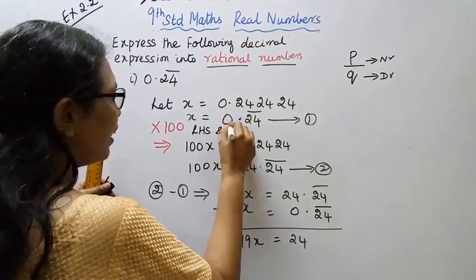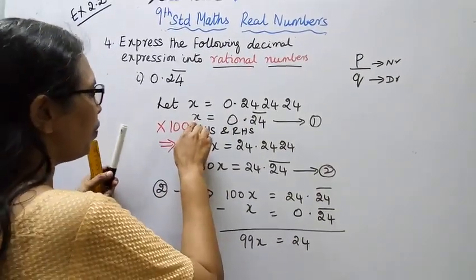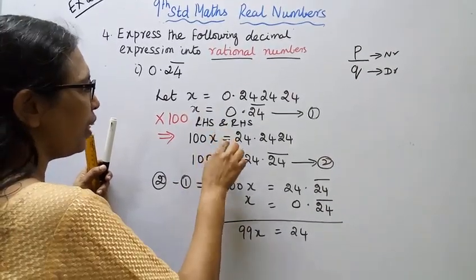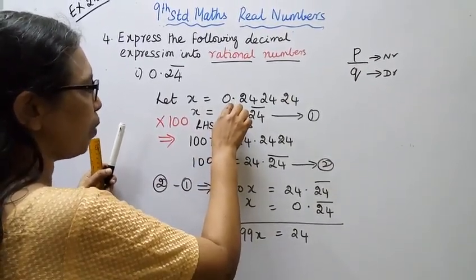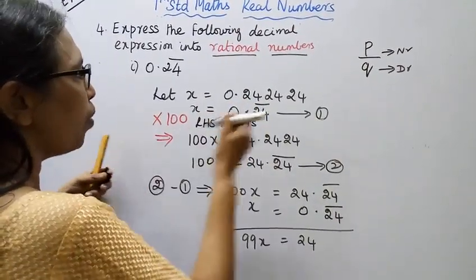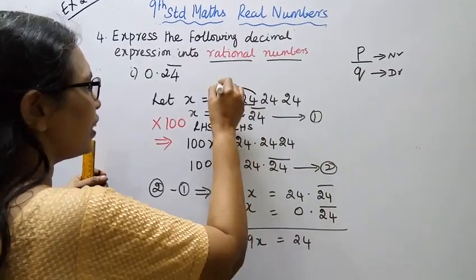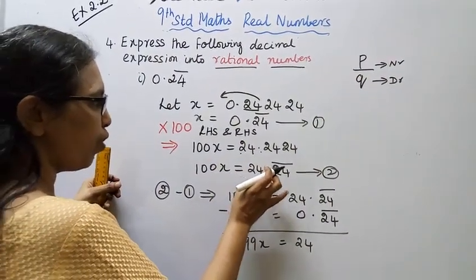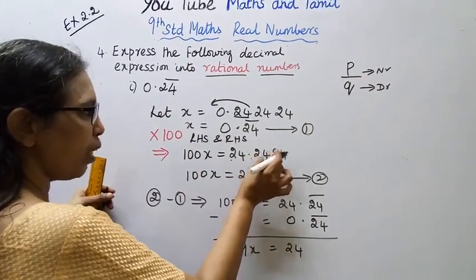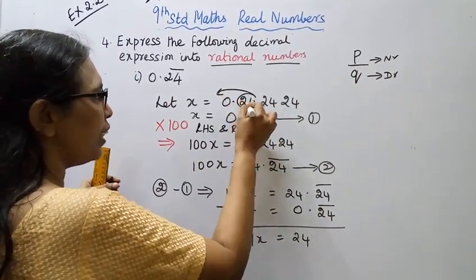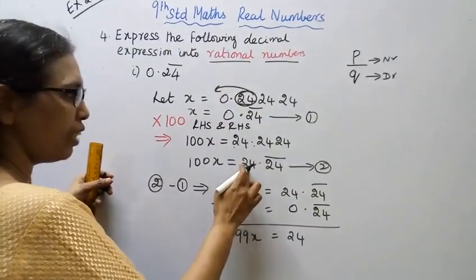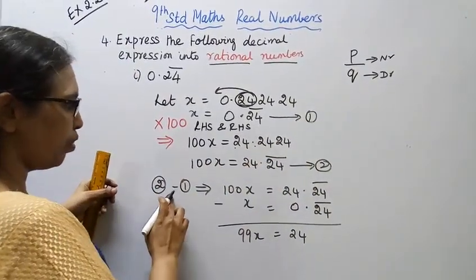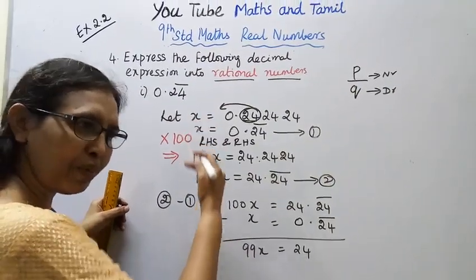Left hand side and right hand side. If you multiply 100x, you get 100x equals 84. If you multiply 100, you get 100x equals 24.24̄. This is equation 2. This is the way.